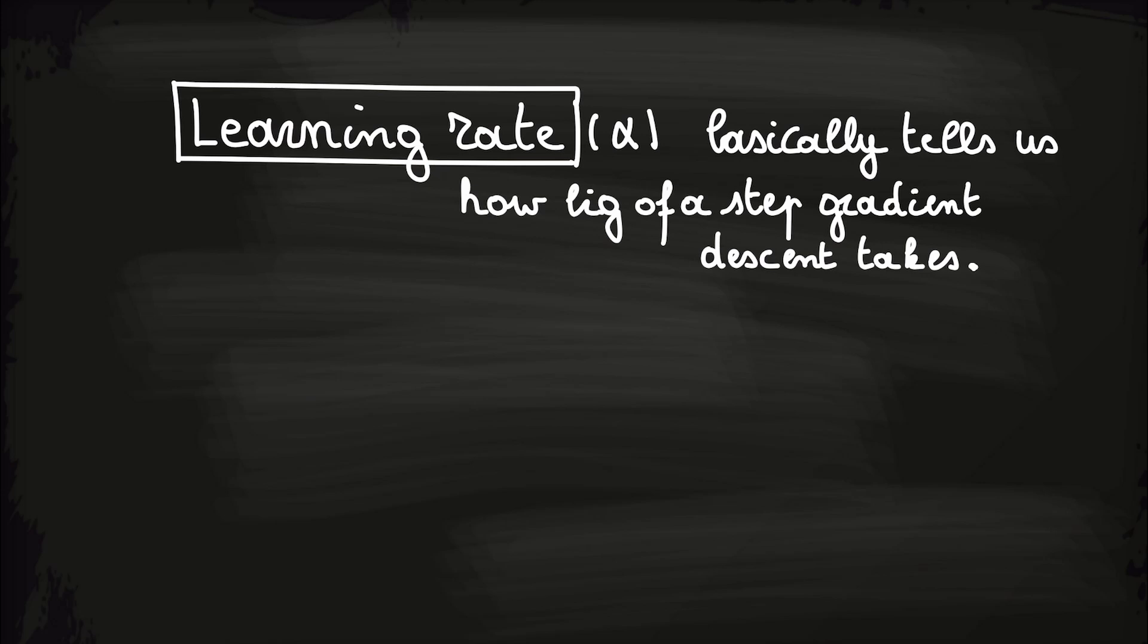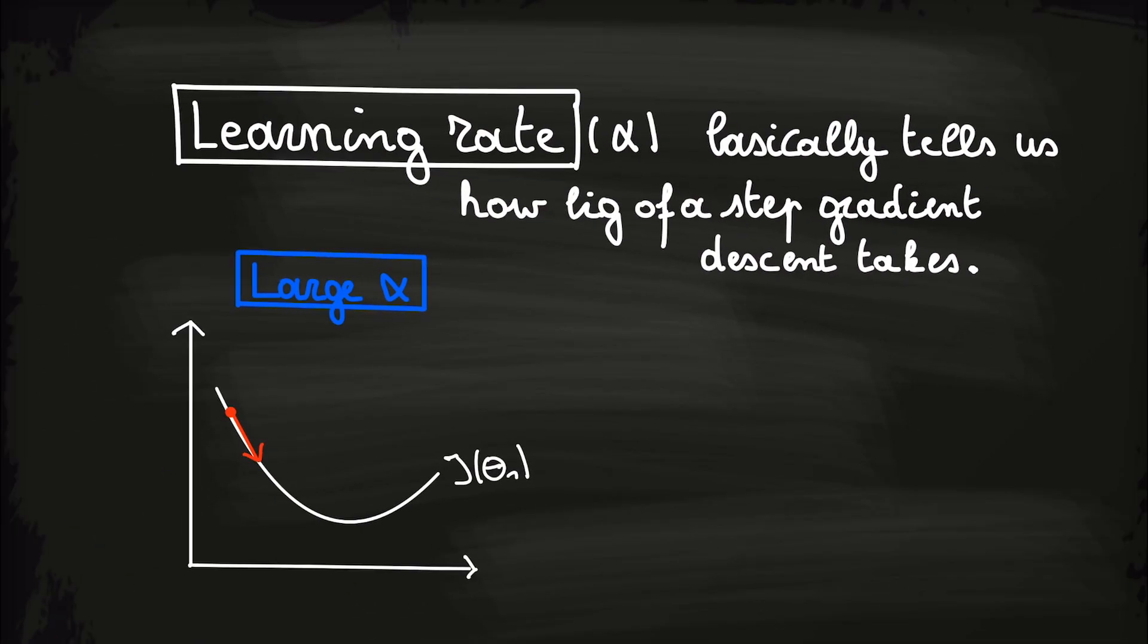Concretely we can explain this as follows. The larger alpha, the larger the step of the gradient descent algorithm. This gives us benefit that we might converge faster and in less steps.